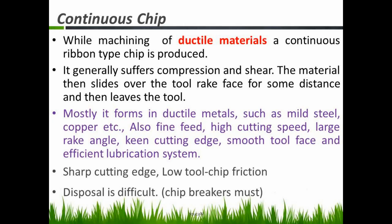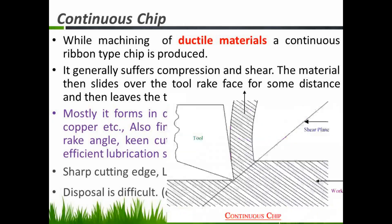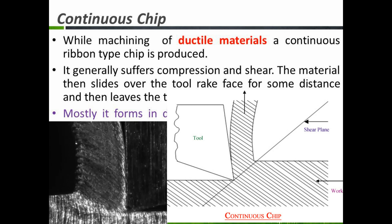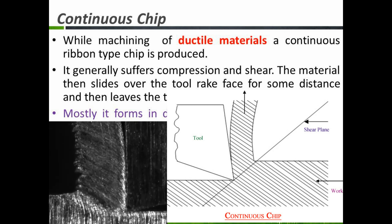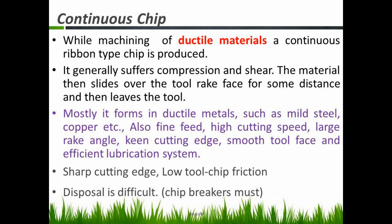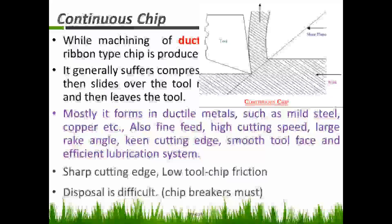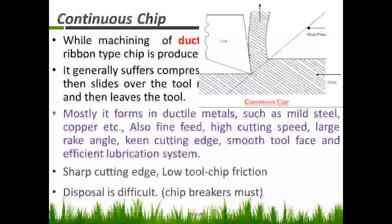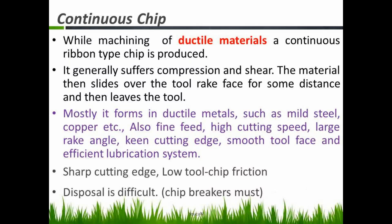Next: continuous chips. In most ductile materials, continuous ribbon-type chips are produced. The material generally suffers compression and shear, then slides over the tool rake face for some distance and leaves the tool. We get continuous chips when machining mild steel or copper, using a fine feed, high cutting speed, large rake angle, and proper lubrication. It will produce a better surface finish.